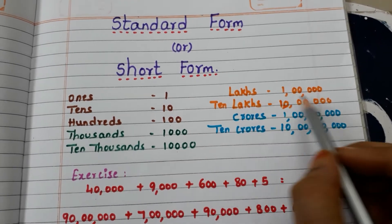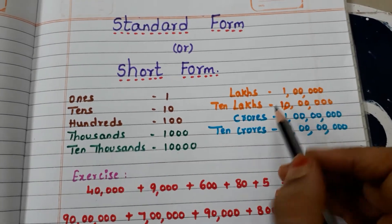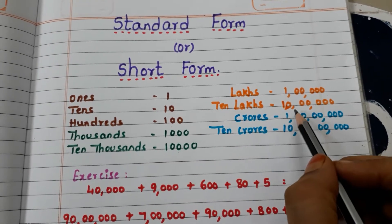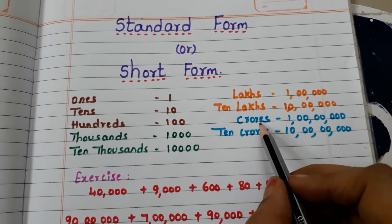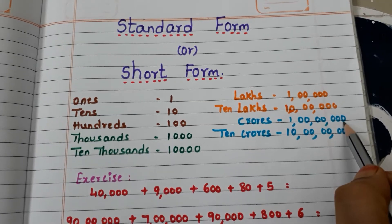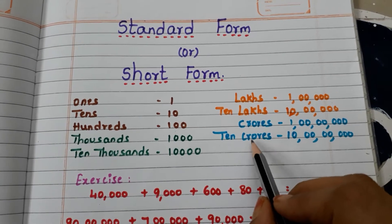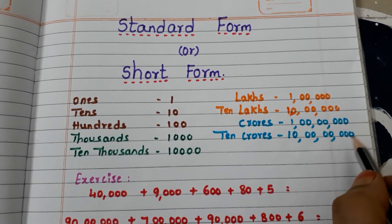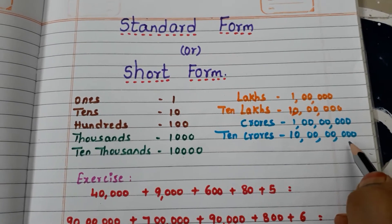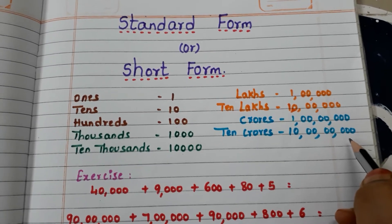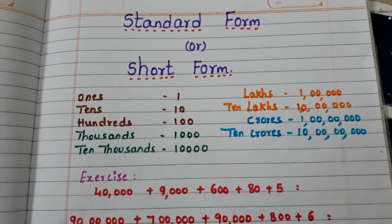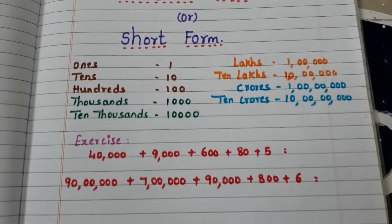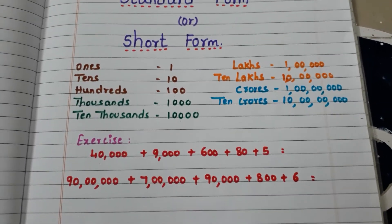For lakhs, five zeros. For ten lakhs, six zeros. For crores, seven zeros. For ten crores, eight zeros. Now let us see how to write the short form for a given expanded form.